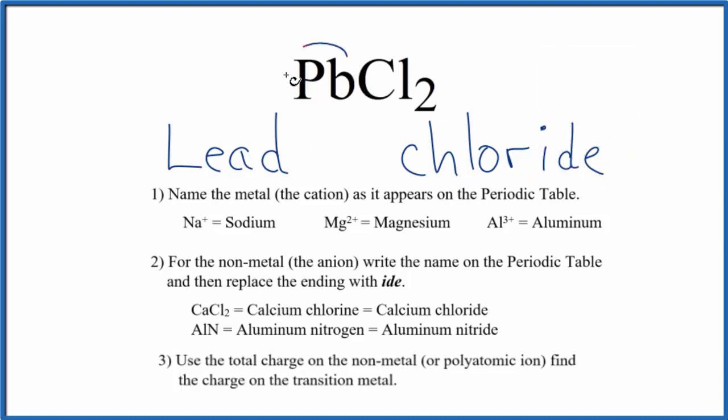So at this point, we have lead chloride. But remember, we said lead is a transition metal. So because it's a transition metal, we don't know the charge. We have to look at what it's bonded to. Chlorine always has a 1- ionic charge, and we have 2 of them.